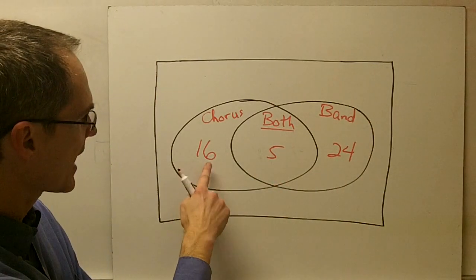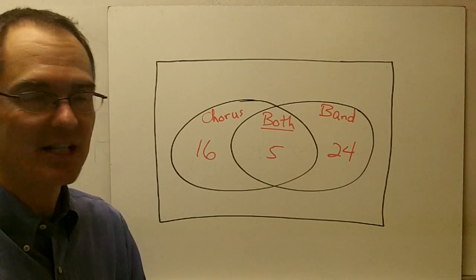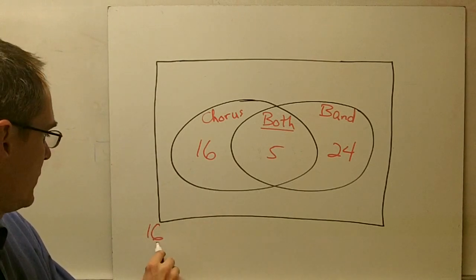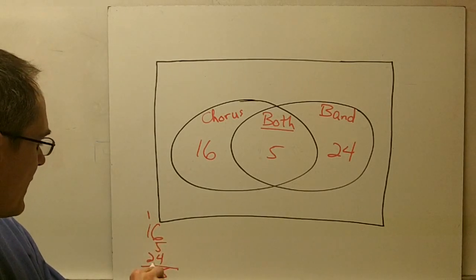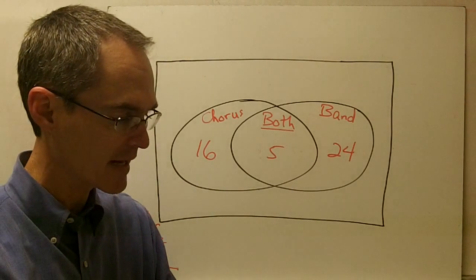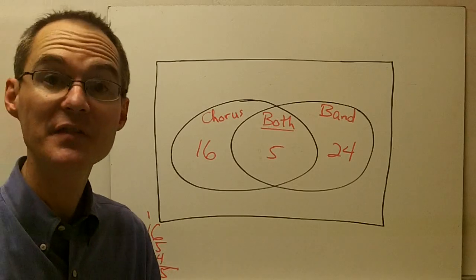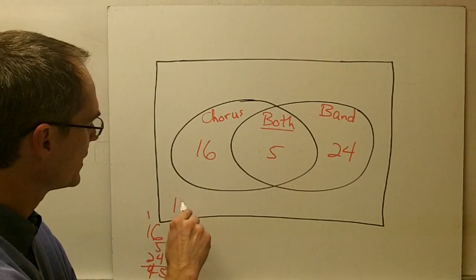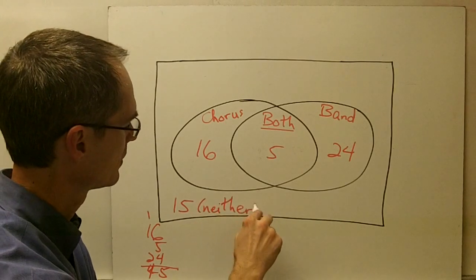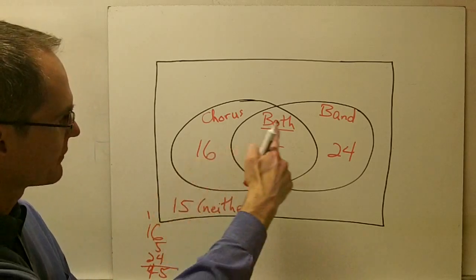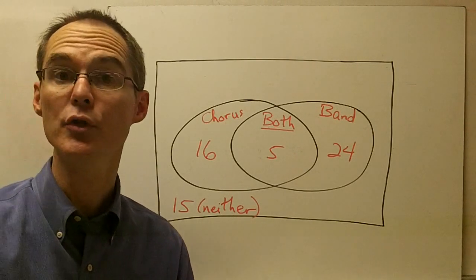Adding up: 16 + 5 + 24 = 45 students. But the total group has 60 students, so 60 − 45 = 15 students are signed up for neither chorus nor band. That number goes in the outer box, outside the two ovals. This gives us the complete Venn diagram, and there's enough information now to answer the questions at the bottom of the page.